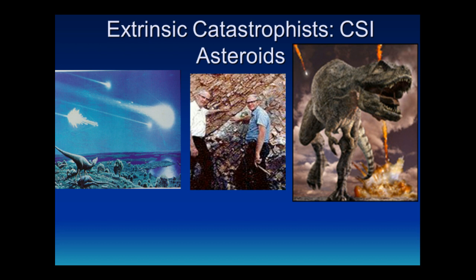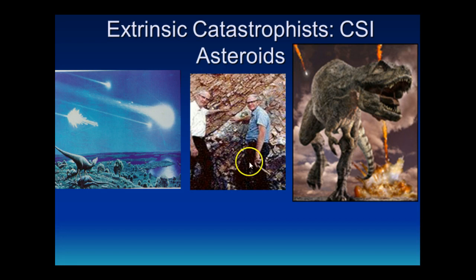Now let's look extraterrestrially — meaning places other than the Earth — at what are called extrinsic factors. Write in your notes that this side of the controversy holds that the ultimate cause of the K-T extinction was external, meaning of an extraterrestrial nature, and catastrophic — meaning fairly sudden and punctuated. The main hypothesis was proposed in 1980 by Luis and Walter Alvarez at the University of California at Berkeley. You can see their picture here at the K-T boundary in California.